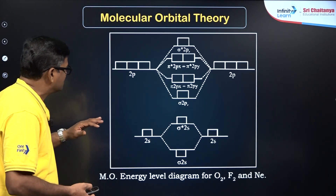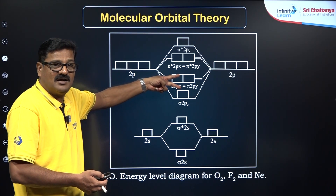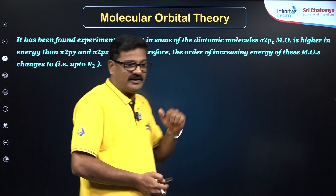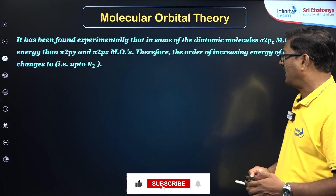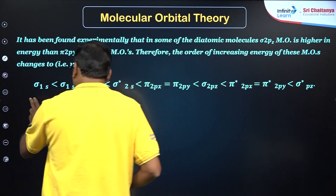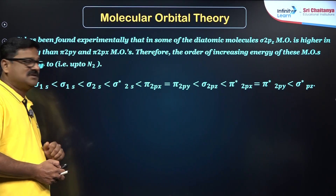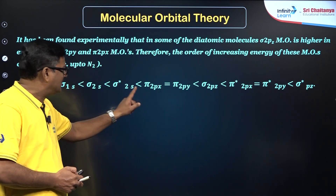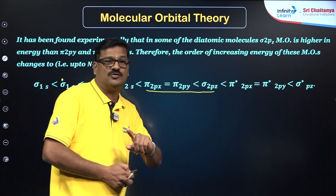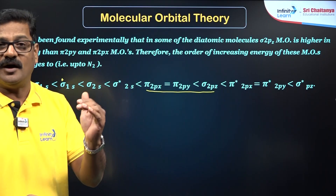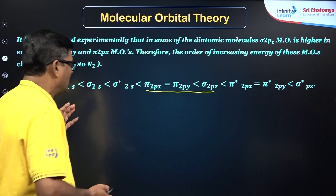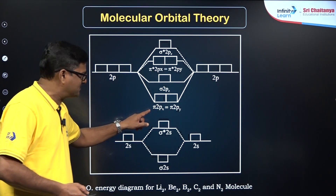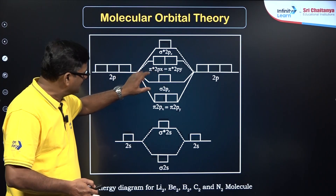For molecules up to nitrogen — like beryllium, carbon, and nitrogen species — the sequence changes: σ1s < σ*1s < σ2s < σ*2s < π2px = π2py < σ2pz. The key difference from the after-nitrogen sequence is that π2px comes before σ2pz up to nitrogen, whereas after nitrogen σ2pz comes before π2px.